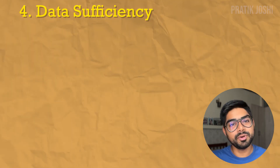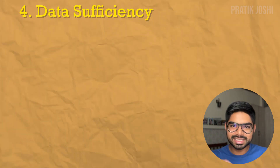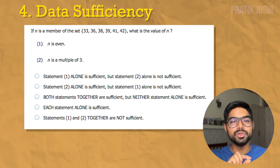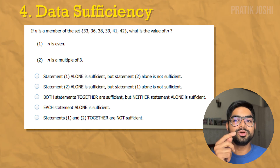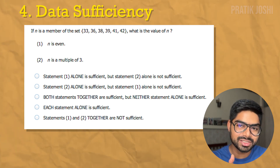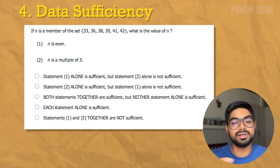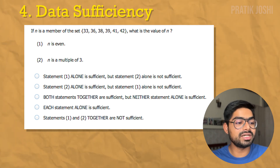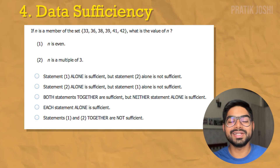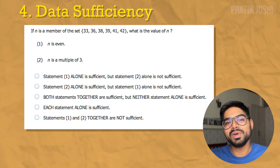Moving on to understand what types of questions are asked in this section — the first one is Data Sufficiency questions. Basically, an example of this type of question is shown on screen right now. You have a question asked at the top, then two statements: statement one and statement two. You then choose whether statement one alone is sufficient to answer the question, statement two alone is sufficient, both statements together are necessary but neither alone is sufficient, each statement alone is sufficient, or neither statement one nor statement two can be used to answer the question. This is not about finding the correct answer, but about how the statements can be used to answer the question and whether they are sufficient — hence the name, Data Sufficiency.